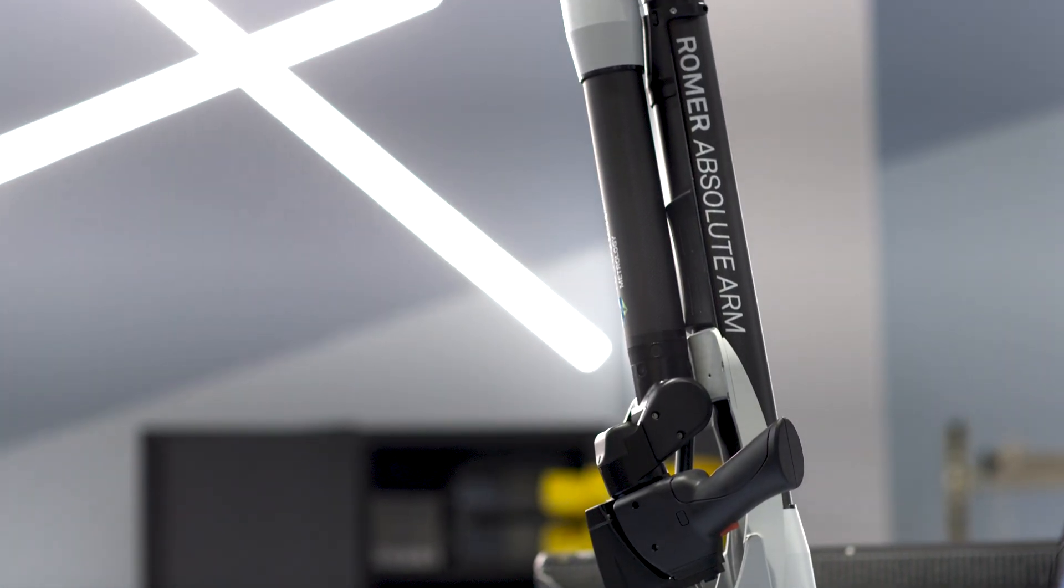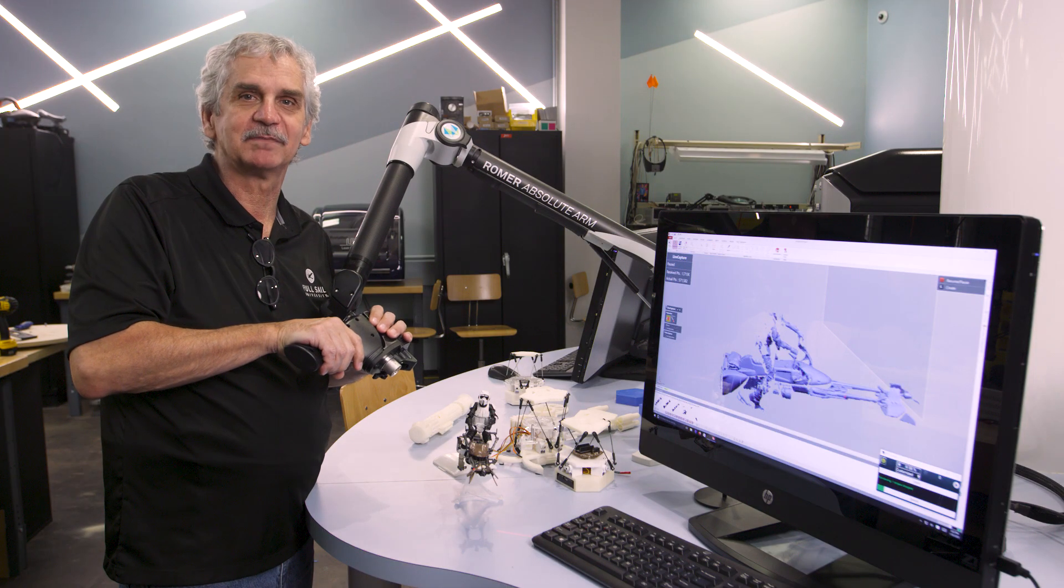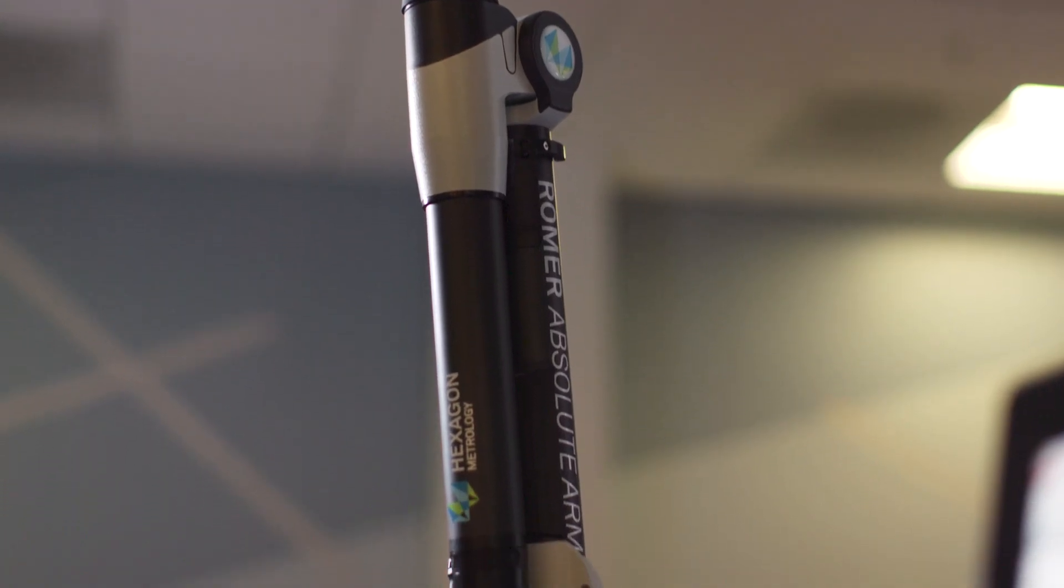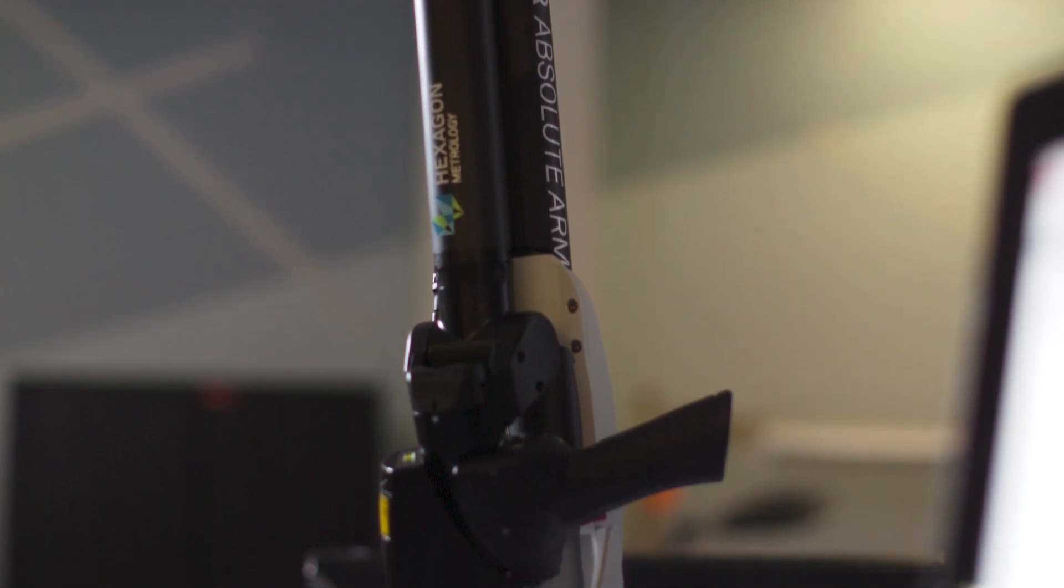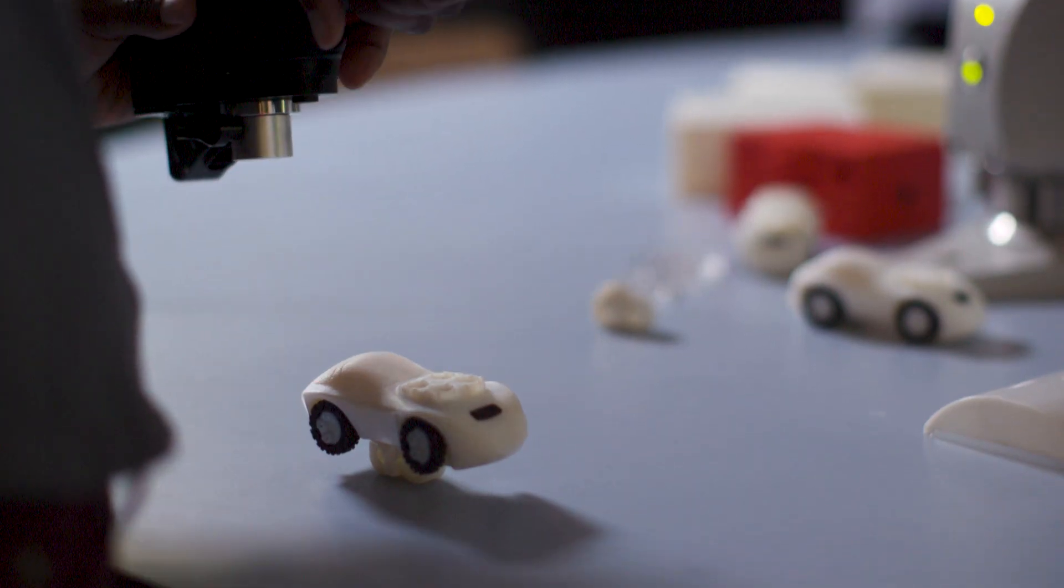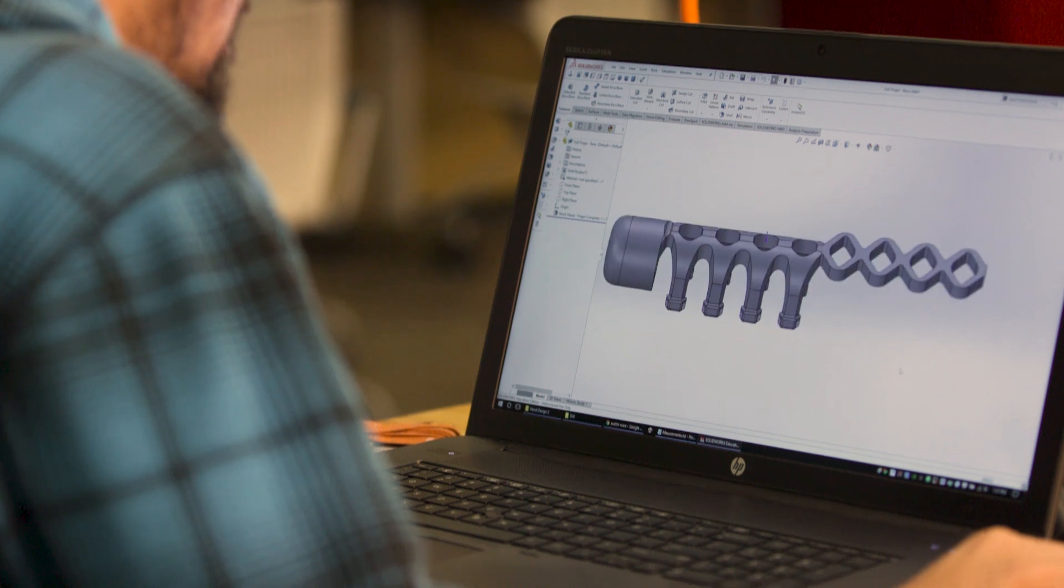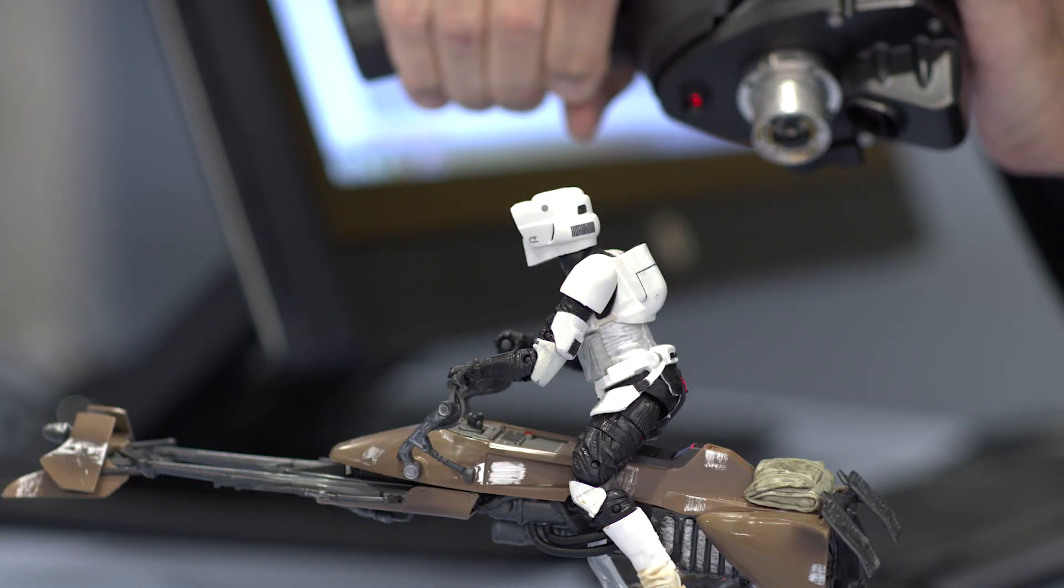This is our laser scanner. This lets us scan and make a model out of almost anything. The ROMER 3D scanner captures a high level of detail, recreating complex shapes so students can efficiently create a model from scratch and complete rapid iterations and prototyping.